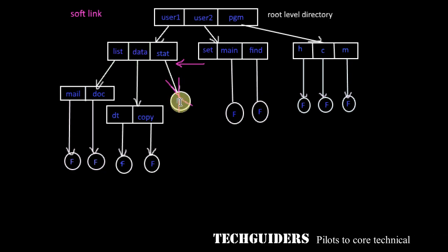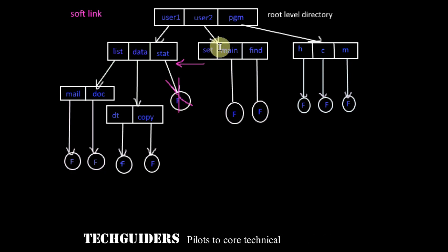Thus, whenever the file is deallocated, then the links can be removed. Otherwise, some systems leave the links and when the user tries to access the symbolic links, they will realize that the file is gone.